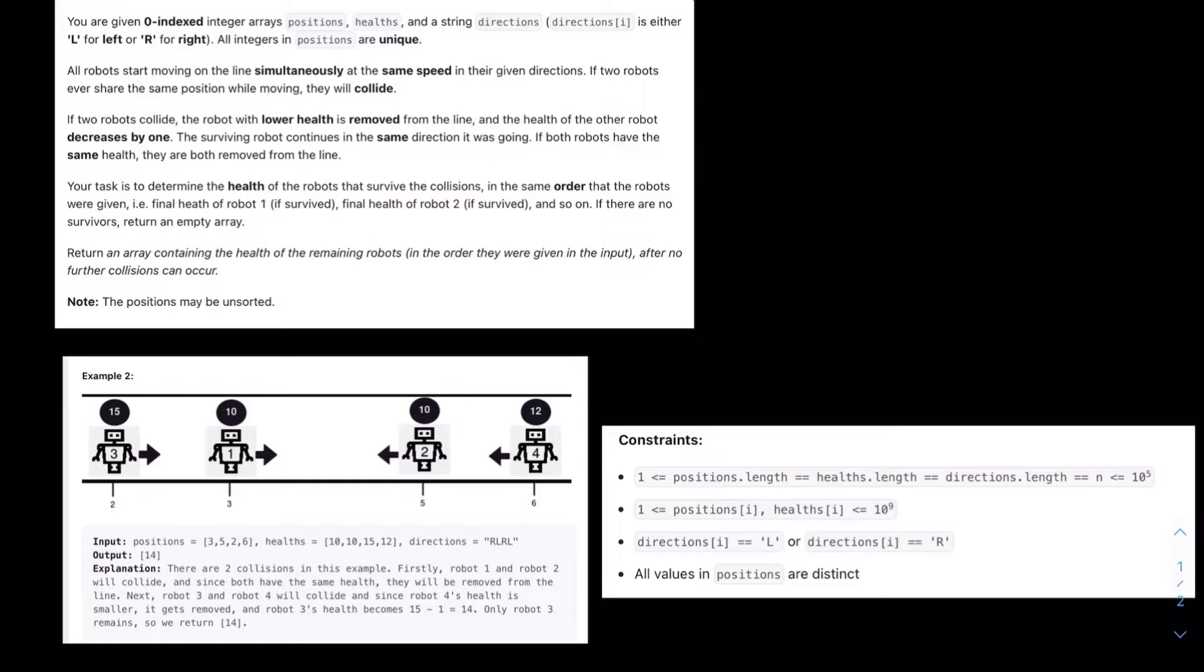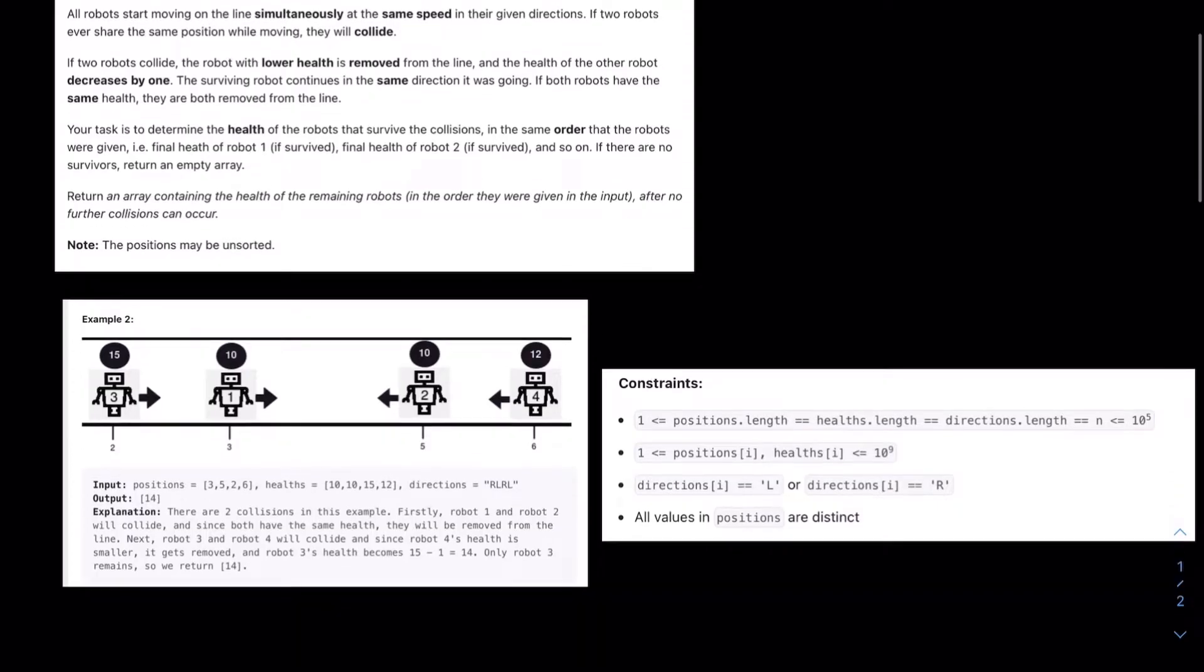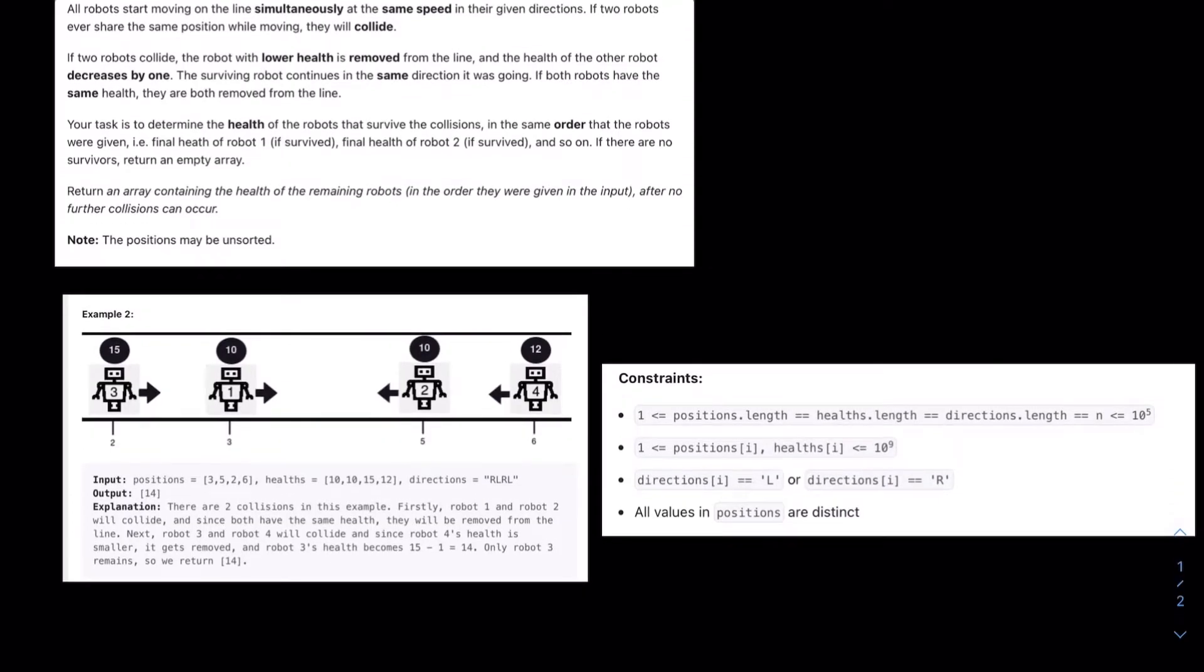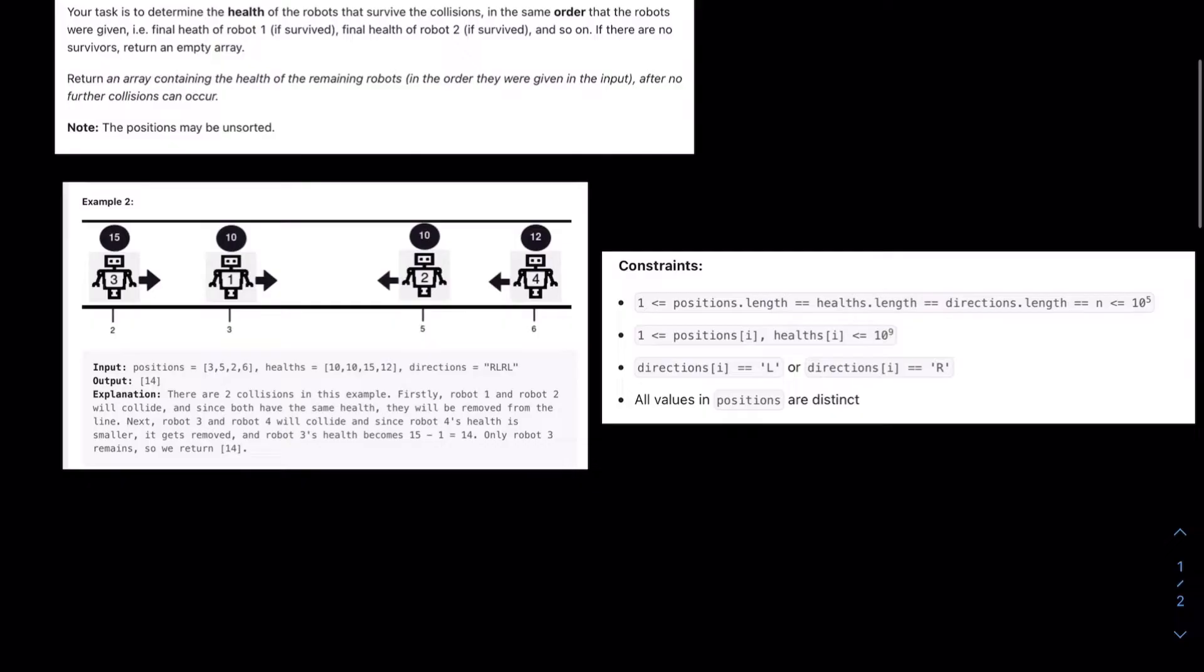Return an array containing the health of the remaining robots in the order they were given in the input, after no further collisions can occur. So the positions may be unsorted.